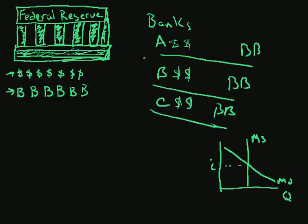What does the Federal Reserve do? It interacts with these banks in some way. Let's say what it would like to do is lower interest rates. In order to do that, what the Federal Reserve should do is increase the money supply, because if they increase the money supply, the interest rate goes down.